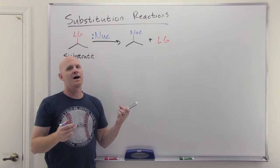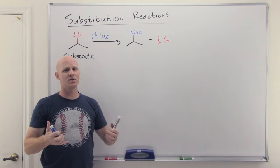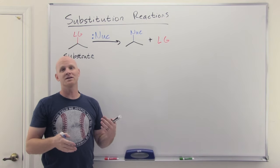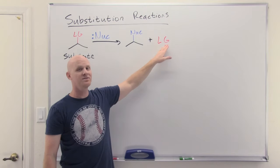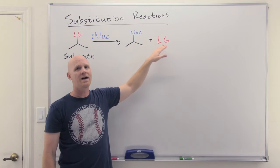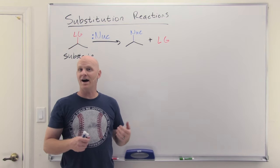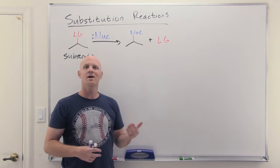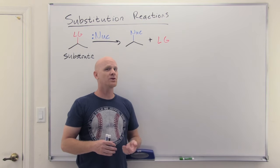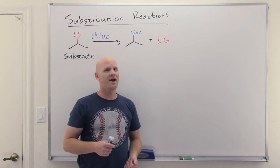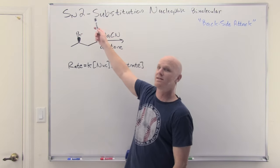To be a nucleophile, the big hallmark is having a lone pair of electrons — though that's a broad definition, and we'll get a better idea once we look at SN2 and SN1 specifically. For the leaving group, the key requirement is that it needs to be stable on its own after it leaves. The larger halides — chloride, bromide, iodide — are the most common leaving groups by far, though we'll see a couple others along the way.